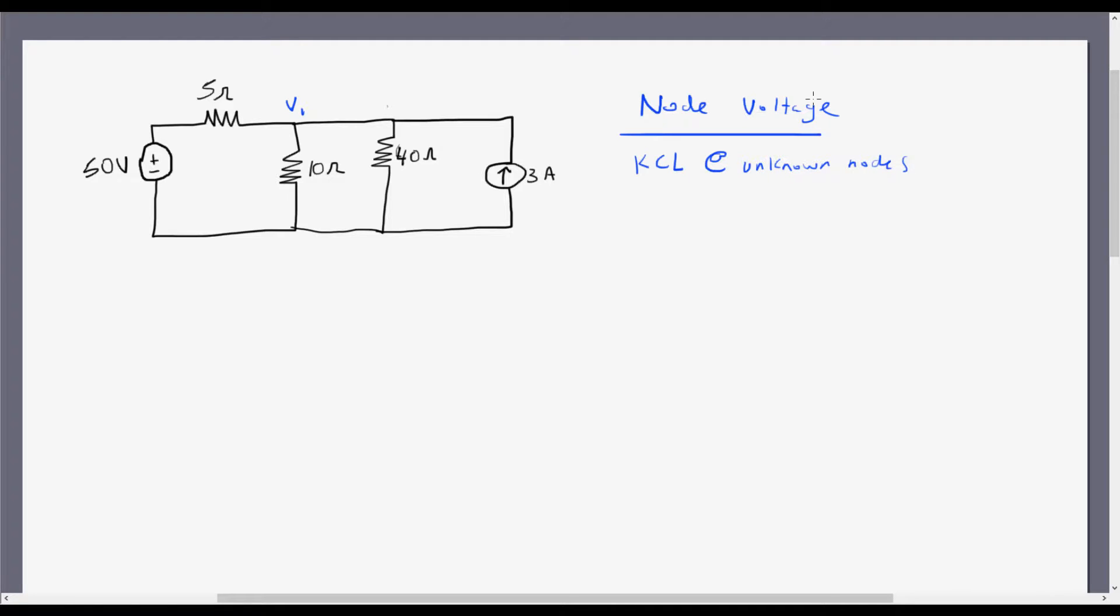I can build a system of equations, and as long as I have the same number of equations as I do unknowns, then I'll be able to solve for my voltages using KCL at all of my unknown nodes.